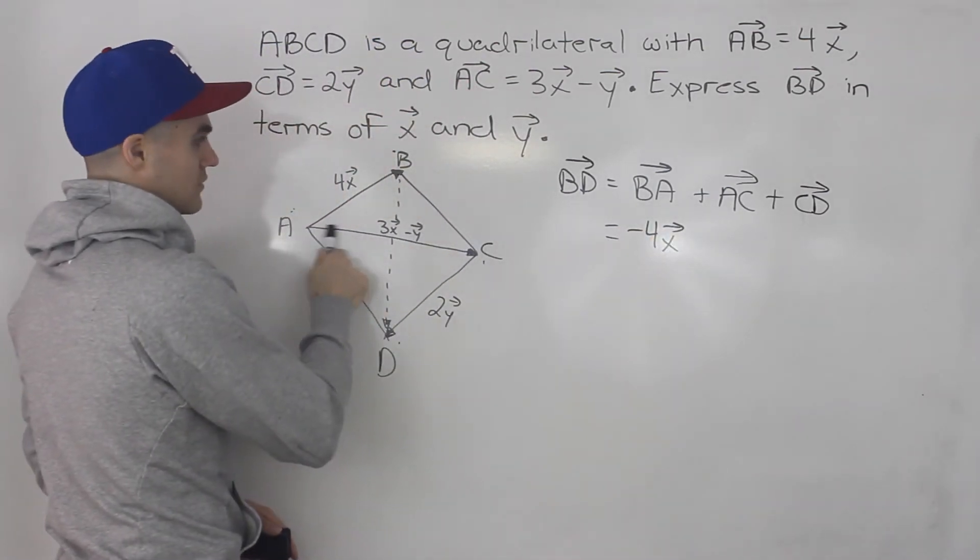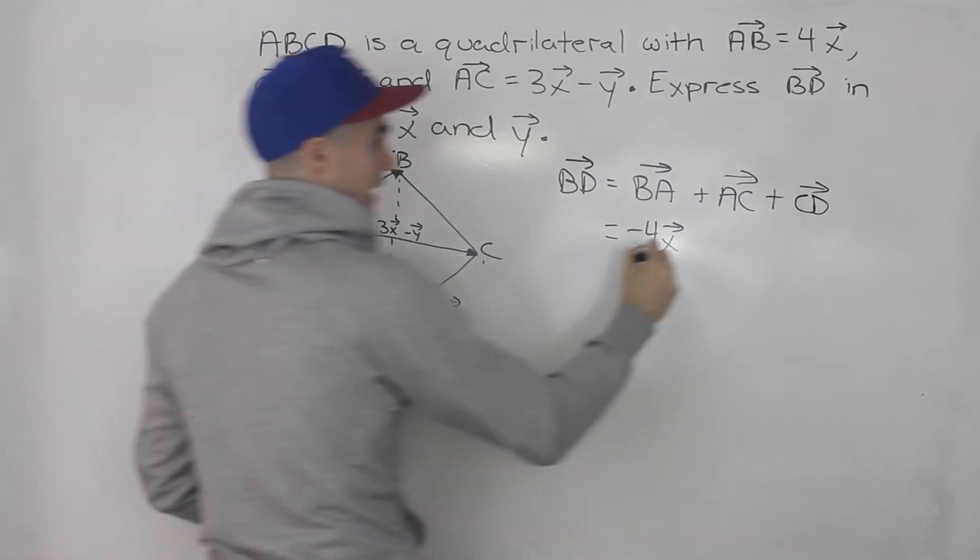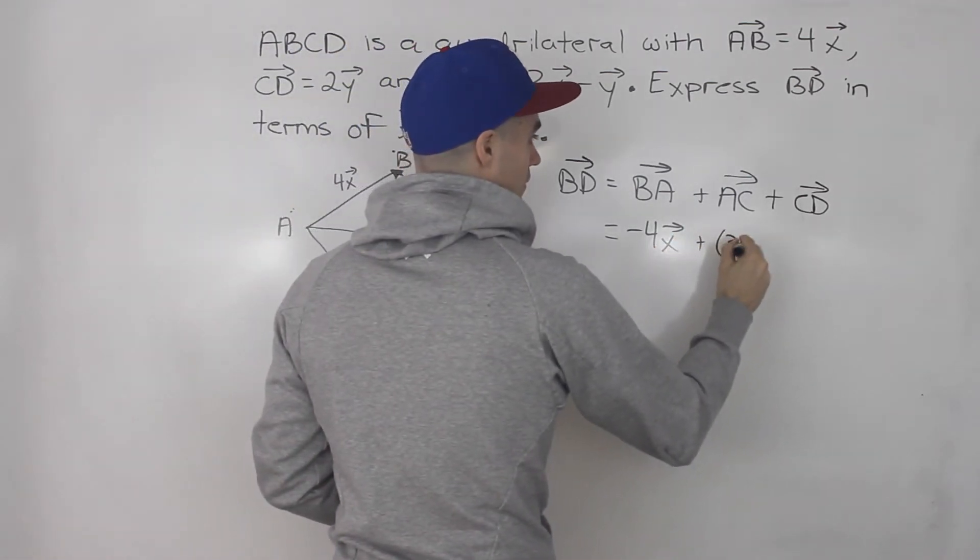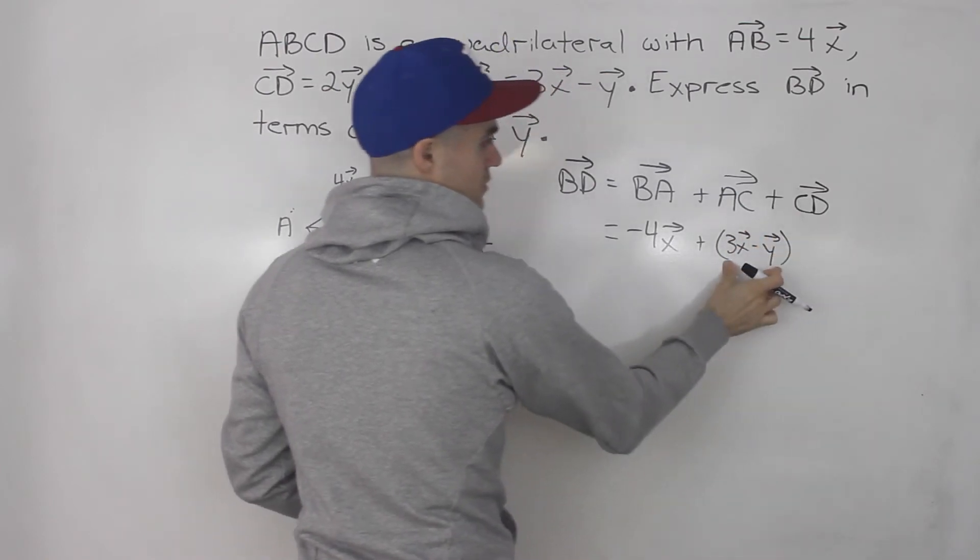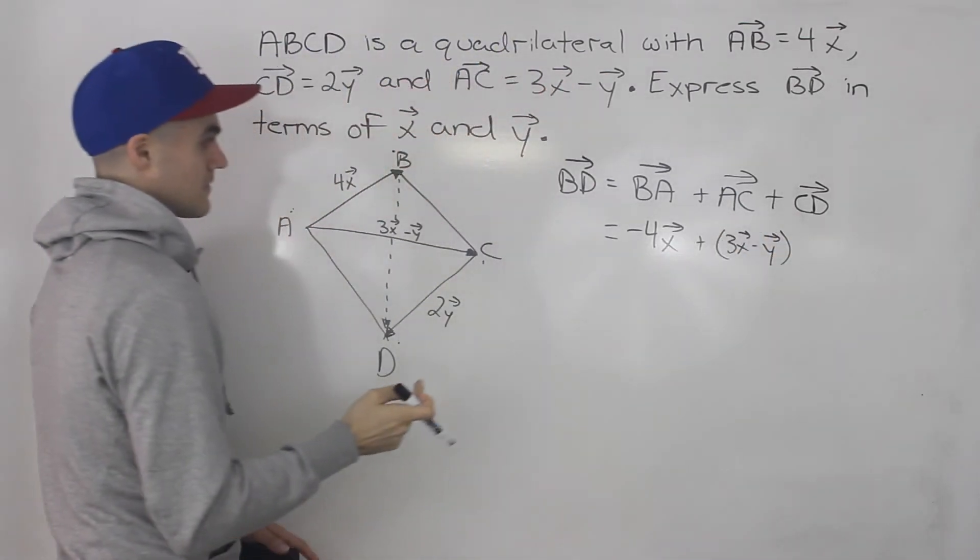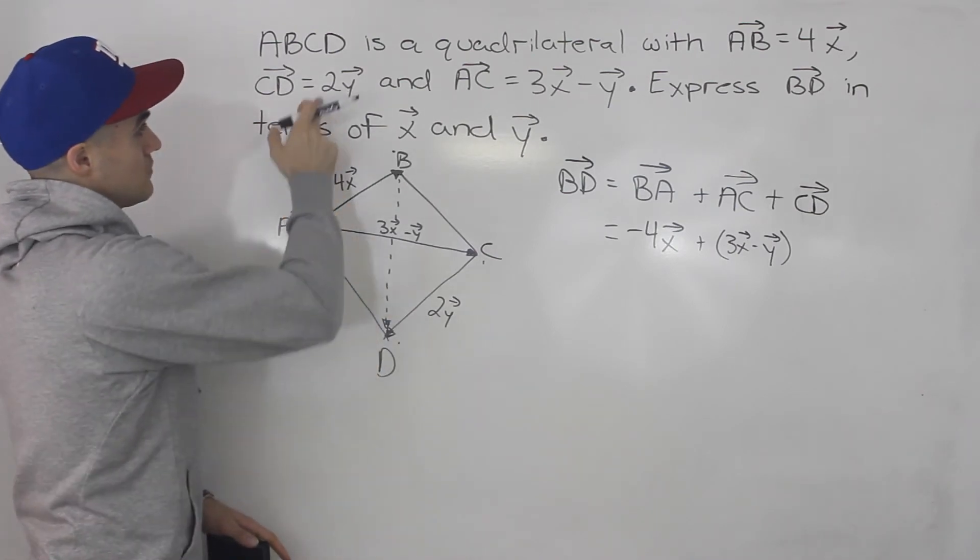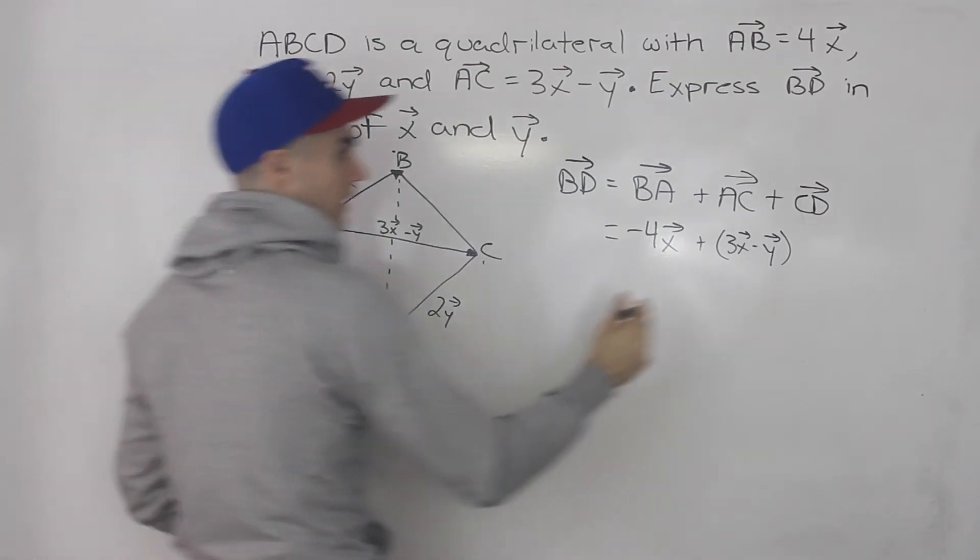And then vector AC we have in terms of 3X minus Y. And then vector CD we have as well right here, which is 2Y.